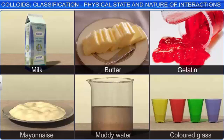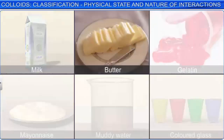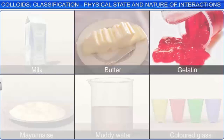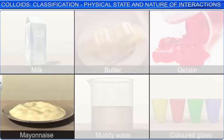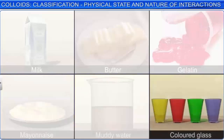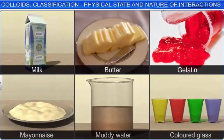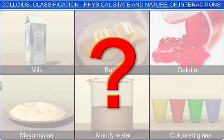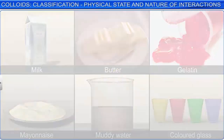Take a look at these: milk, butter, gelatin, mayonnaise, muddy water, and colored glass. We use them in our day-to-day life, but have you ever wondered about the chemistry hidden in them? These substances are known as colloids in chemistry.